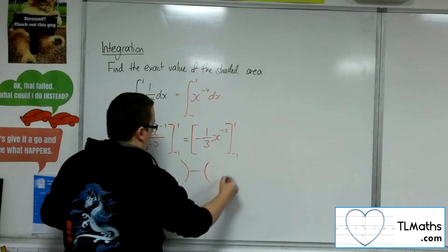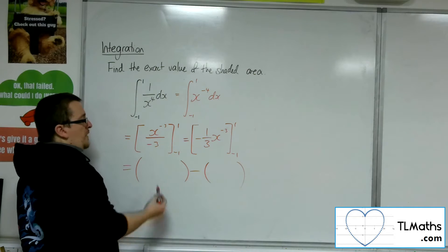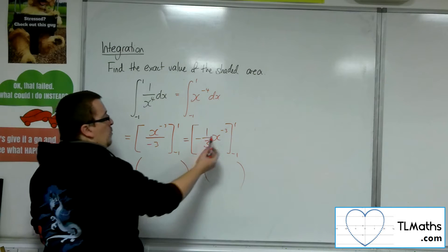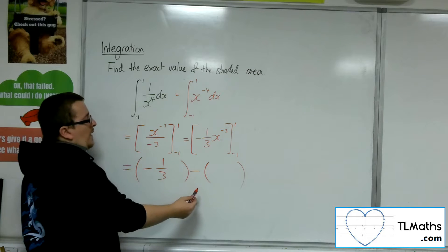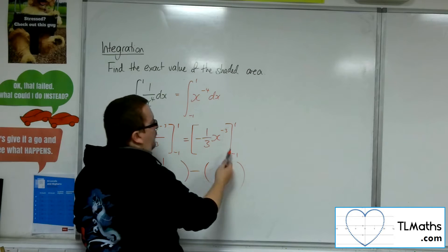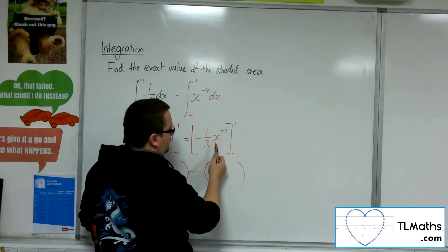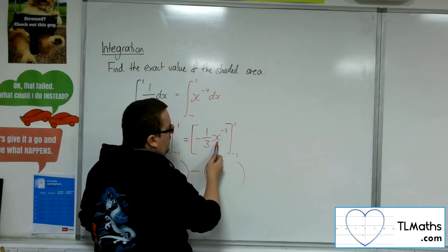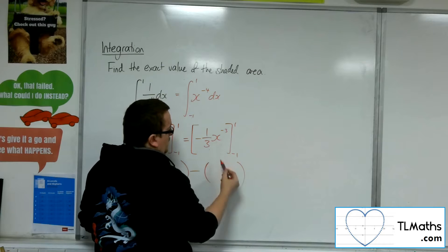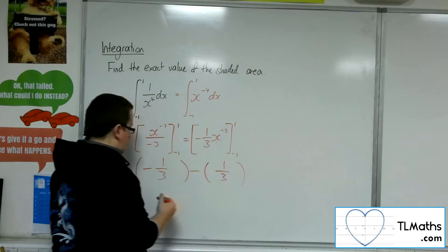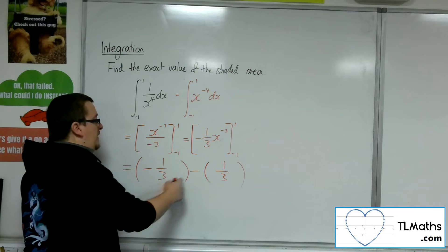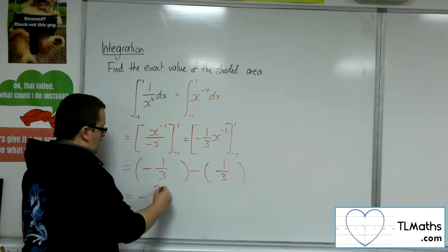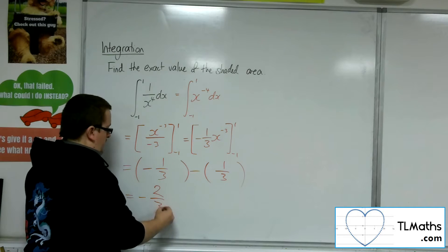Opening up the brackets: substituting in 1, we get minus 1 third. Then subtracting, substituting in minus 1, we have minus 1 to the minus 3, which is just minus 1, so we get positive 1 third. So we've got minus 1 third take away 1 third, which gives minus 2 thirds.